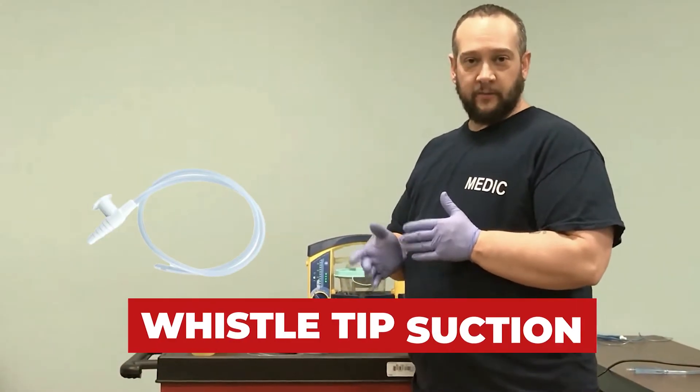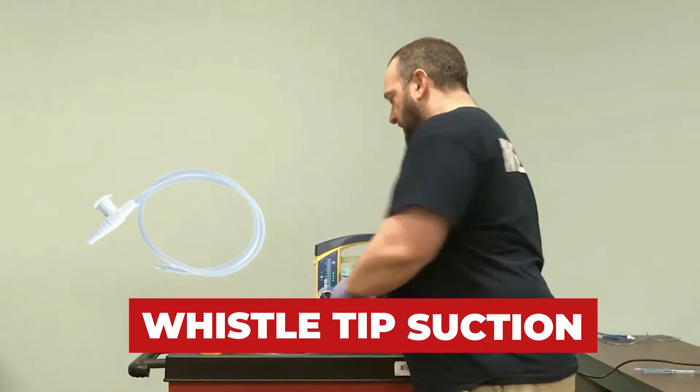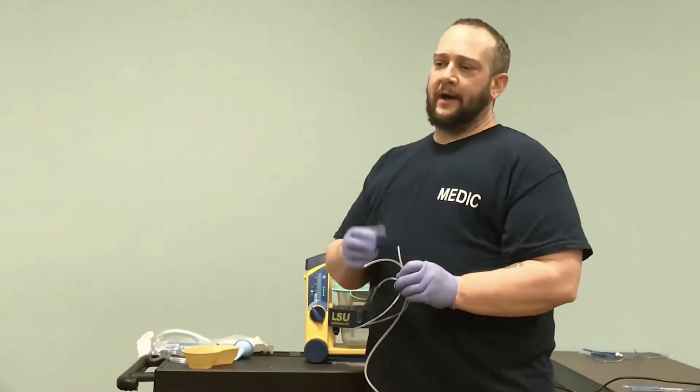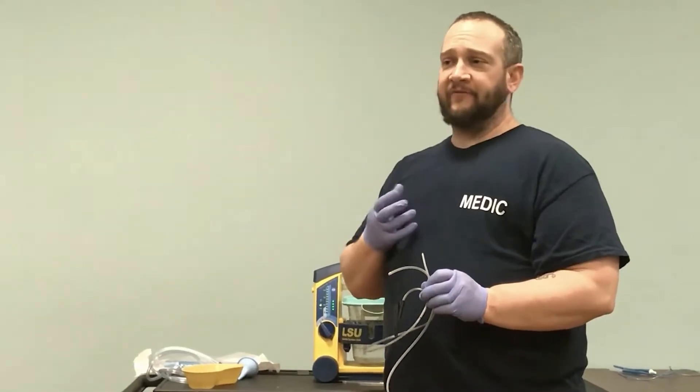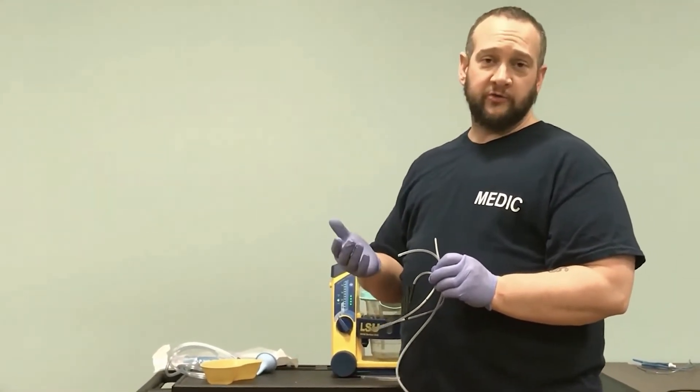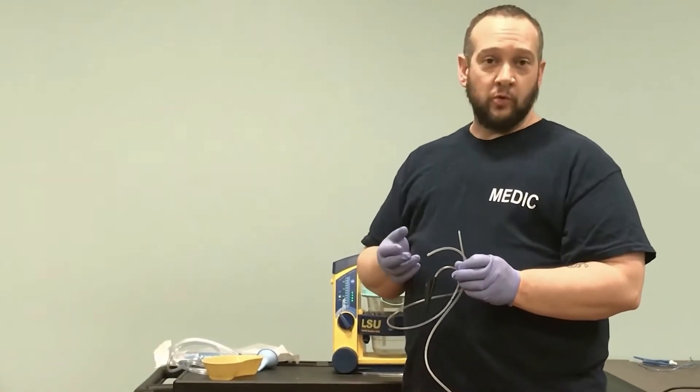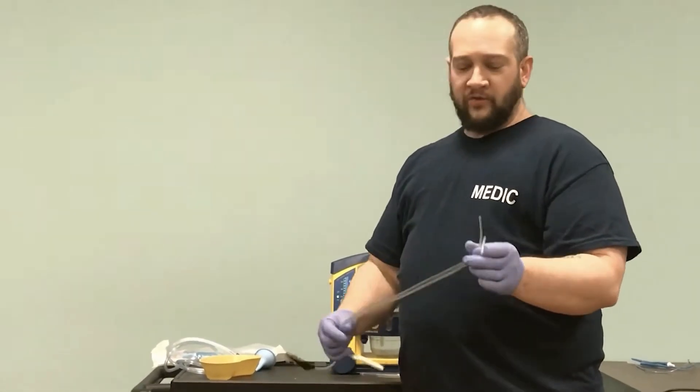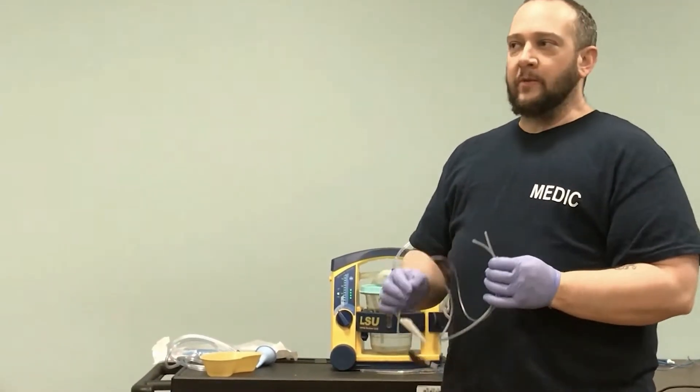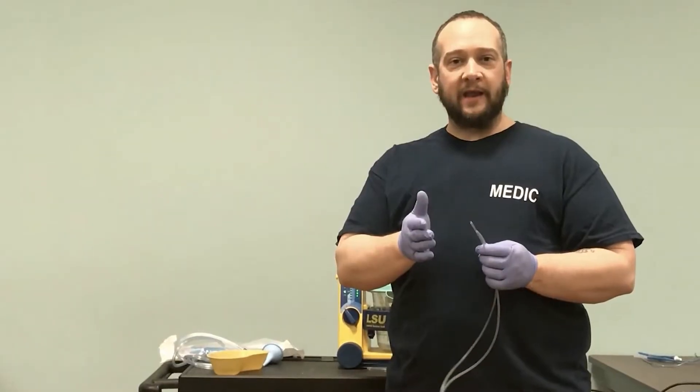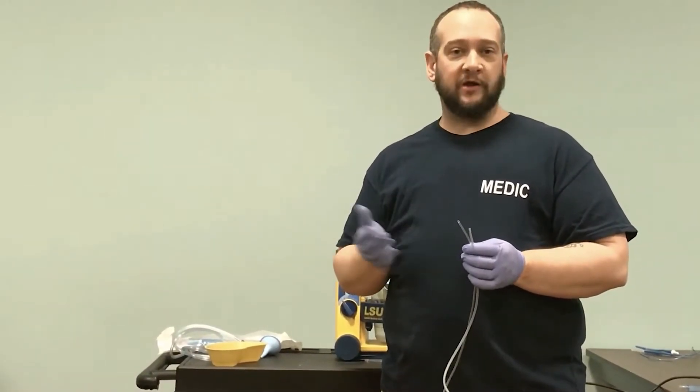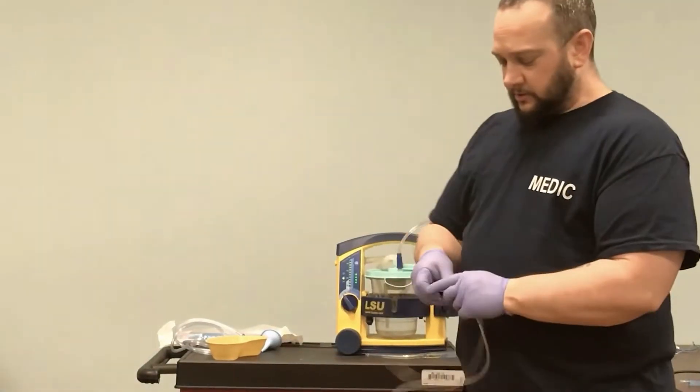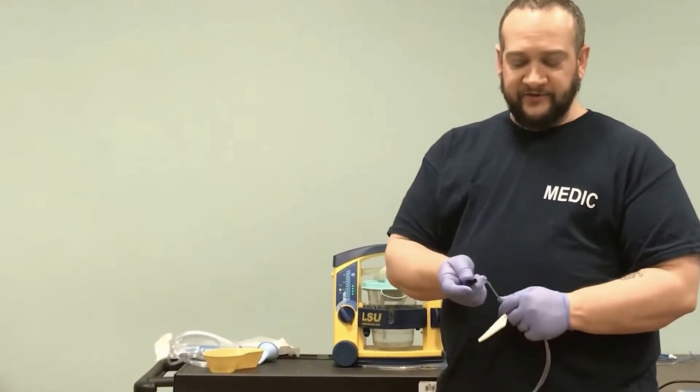We have our soft tip or whistle tip, also known as French catheters. These are flexible and bendy. If we have individuals with a stoma, a surgical opening, or some type of tube inserted like a supraglottic or endotracheal tube, a whistle tip will be more gentle. For infants and newborns, the whistle tip is more appropriate for their delicate oropharynx. These come in different sizes, like French 29 versus French 32, referring to internal diameter.